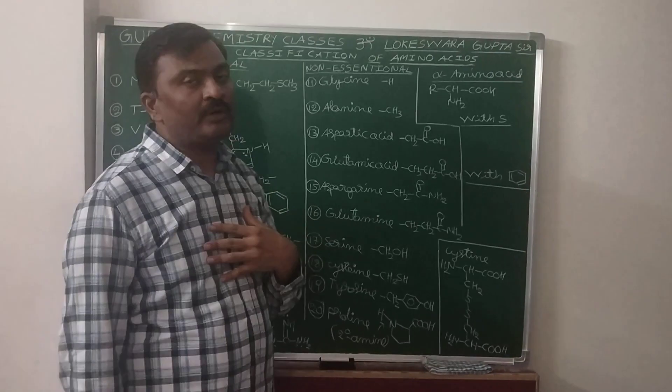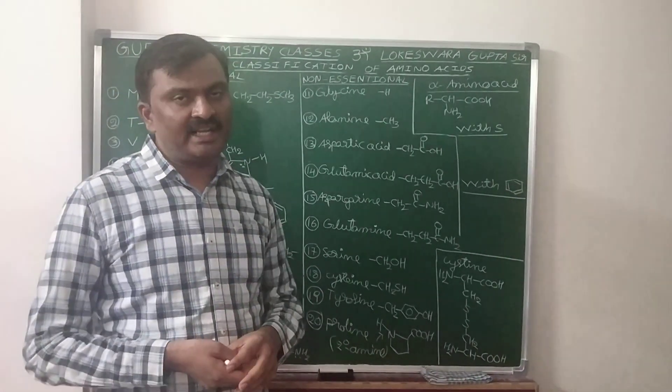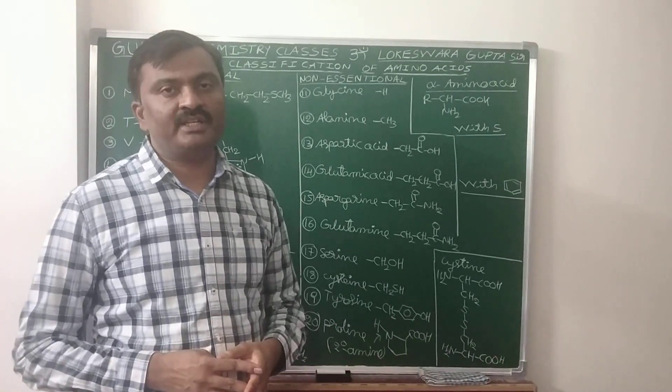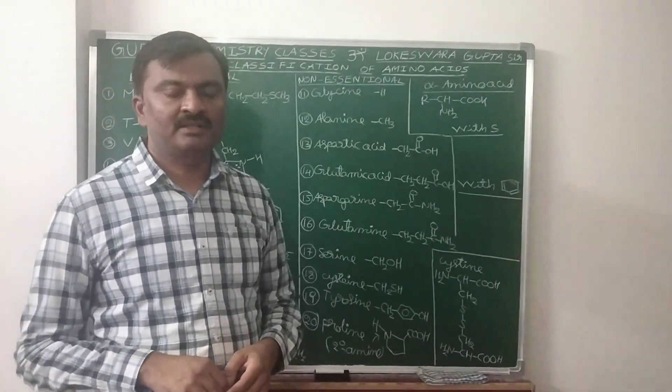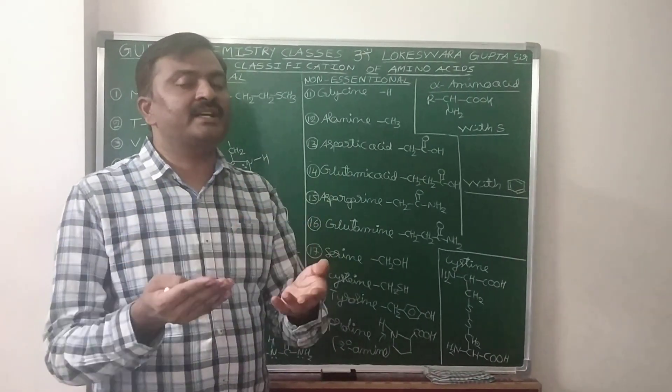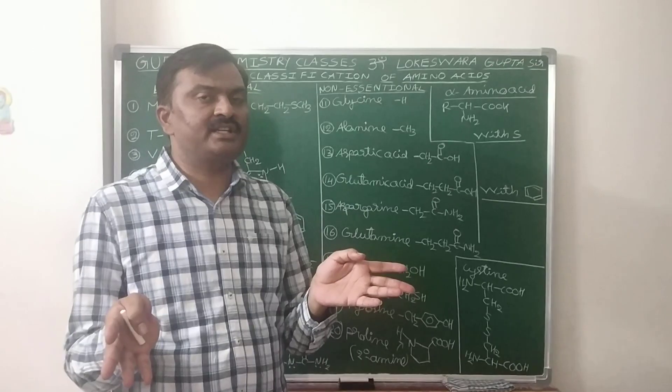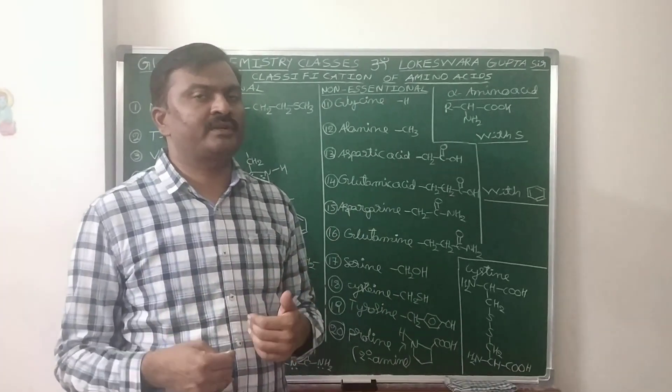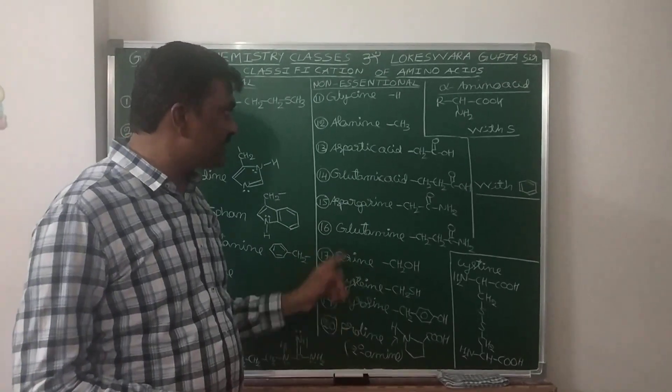In our body, 20 alpha amino acids are present. How are they classified? Out of 20, 10 amino acids can be synthesized in our body. No need to take those 10 amino acids through our diet. So they are not essentially needed through diet, so those are called non-essential amino acids.